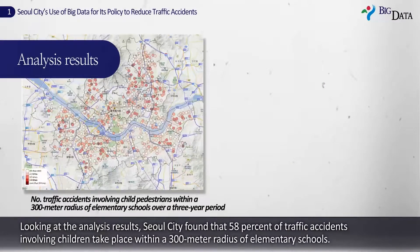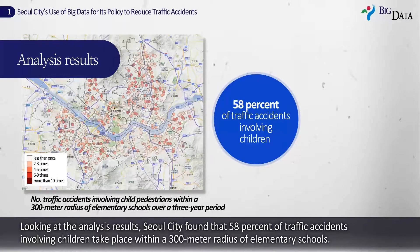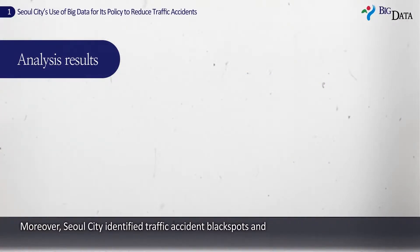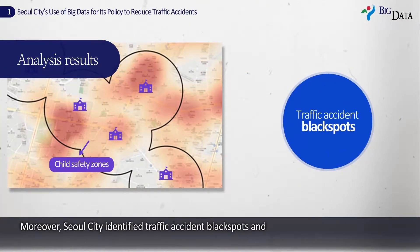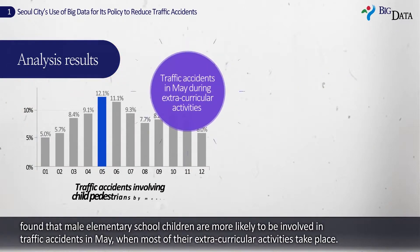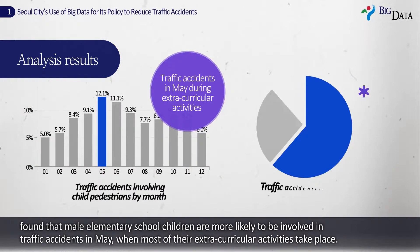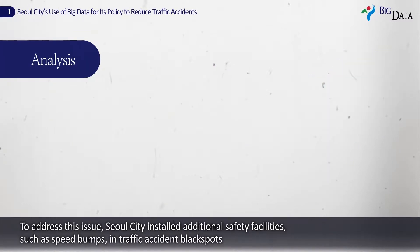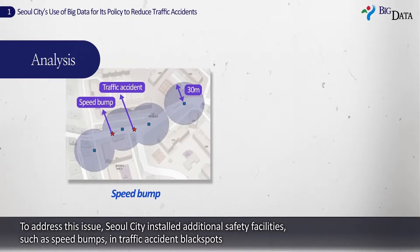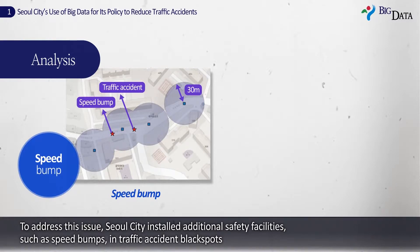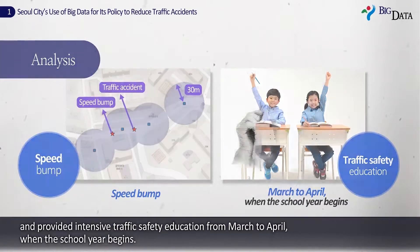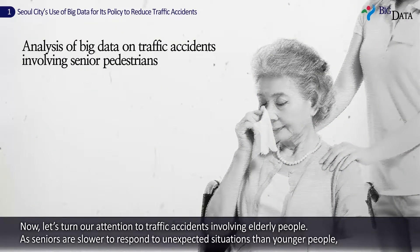Looking at the analysis results, Seoul City found that 58% of traffic accidents involving children take place within a 300-meter radius of elementary schools. Moreover, Seoul City identified traffic accident black spots and found that male elementary school children are more likely to be involved in traffic accidents in May, when most of their extracurricular activities take place. To address this issue, Seoul City installed additional safety facilities such as speed bumps in traffic accident black spots and provided intensive traffic safety education from March to April, when the school year begins.